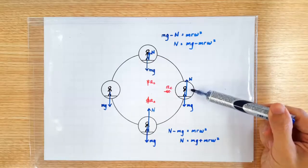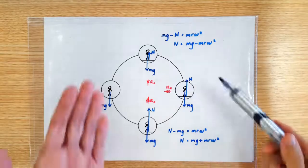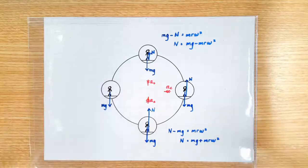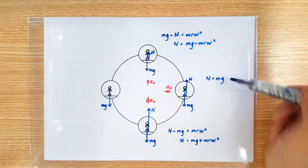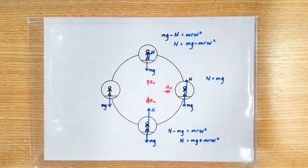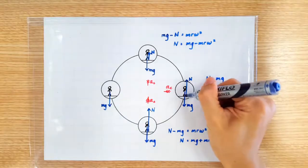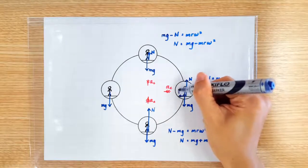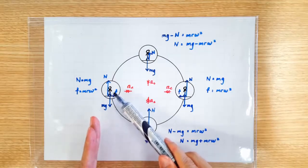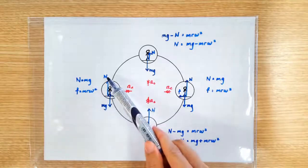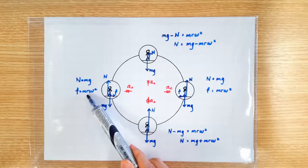When the man is at the three o'clock position, the centripetal direction is leftward, which means the vertical net force should be zero. So the normal contact force is exactly equal to the weight. What is providing the required centripetal force? It's got to be friction. The same thing is happening at the nine o'clock position — the normal contact force equals the weight and friction provides the required centripetal force.